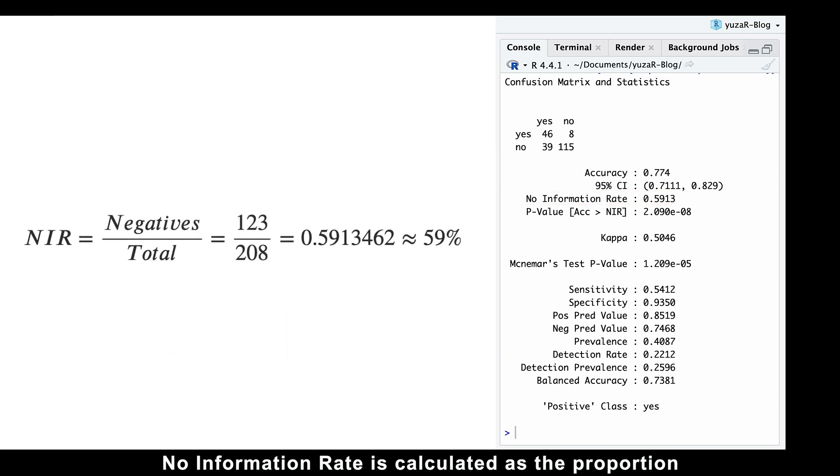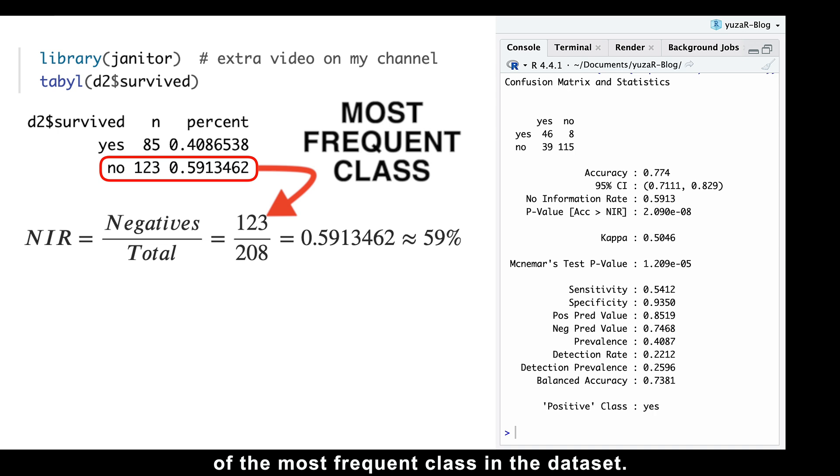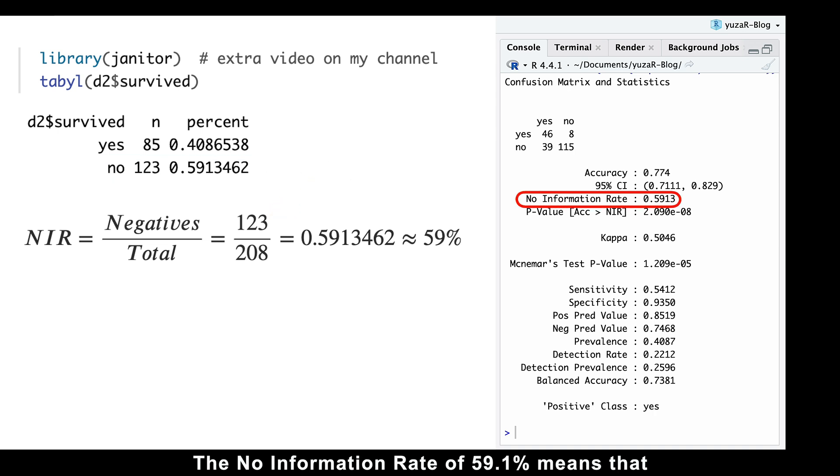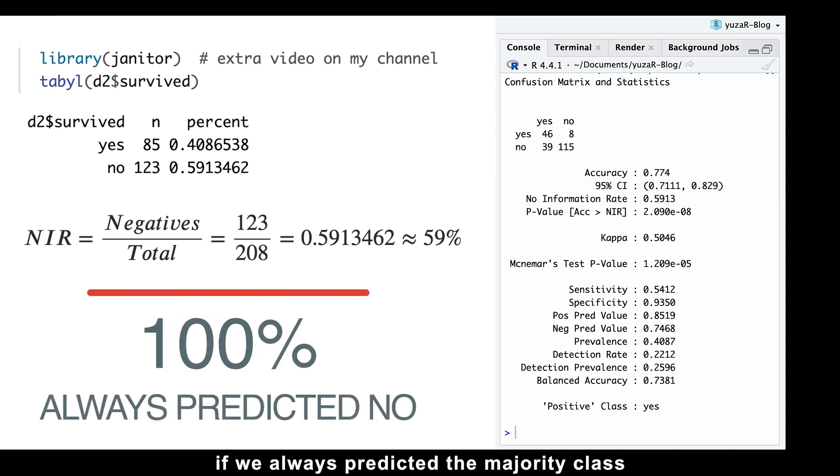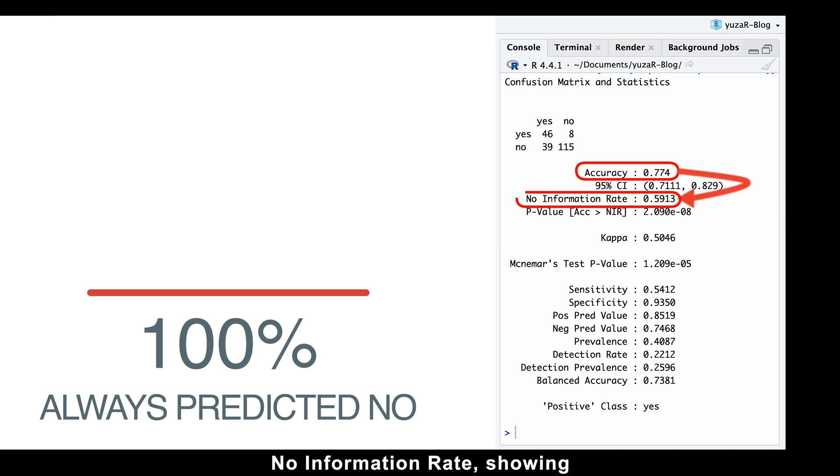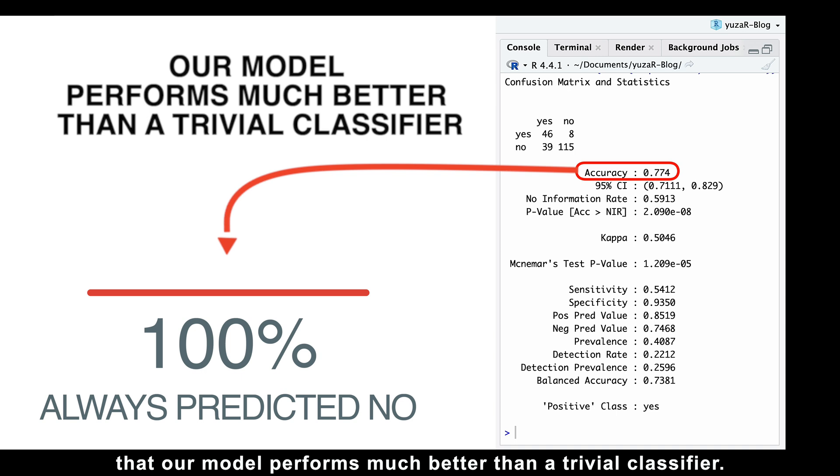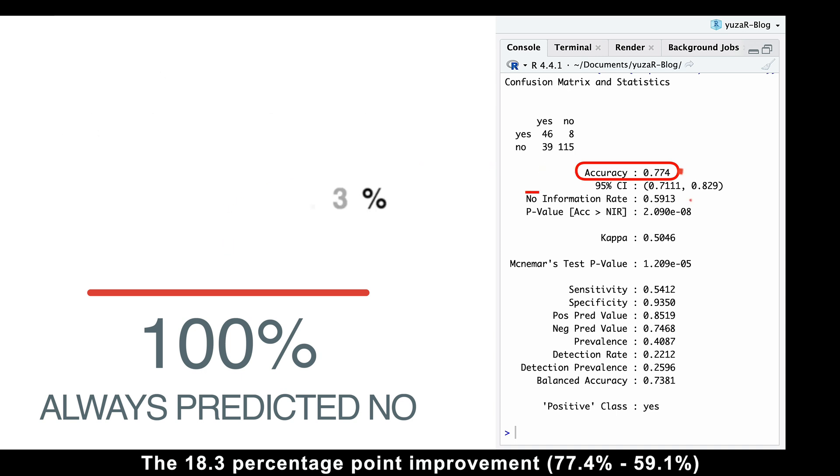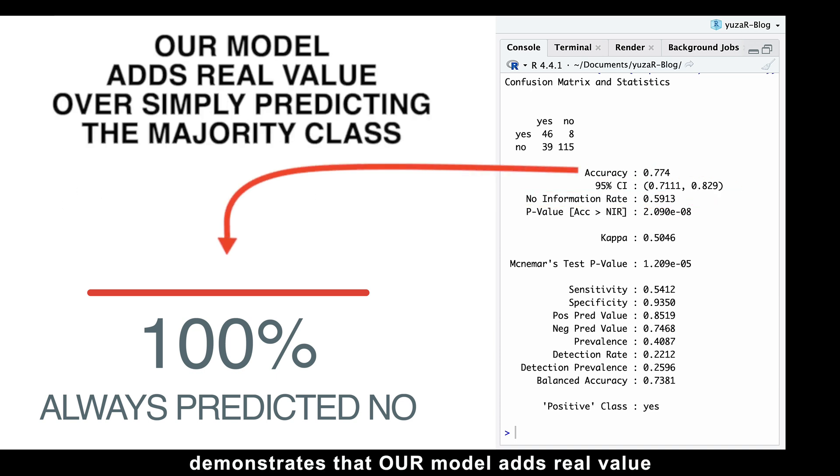No information rate is calculated as the proportion of the most frequent class in the dataset. The no information rate of 59% means that if we always predicted the majority class, negative outcome in our example, we'd achieve 59% accuracy. Our model's accuracy is 77.4%, which is much higher than the no information rate, showing that our model performs much better than a trivial classifier. The 18.3 percentage point improvement demonstrates that our model adds real value over simply predicting the majority class.